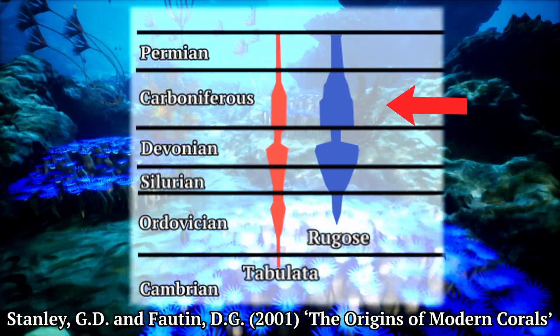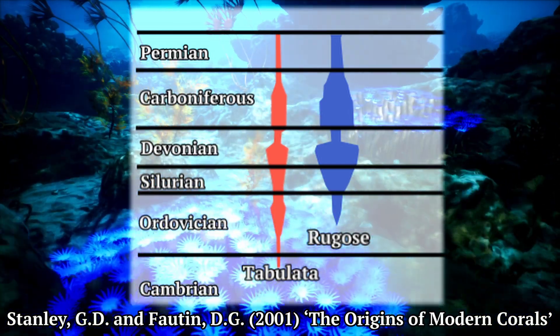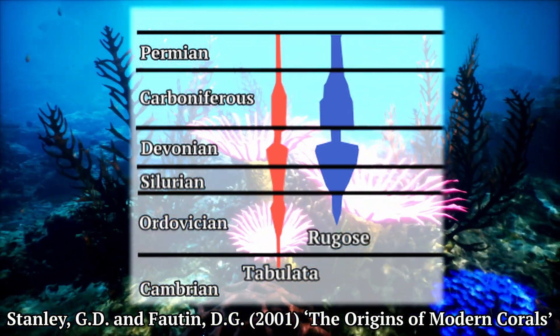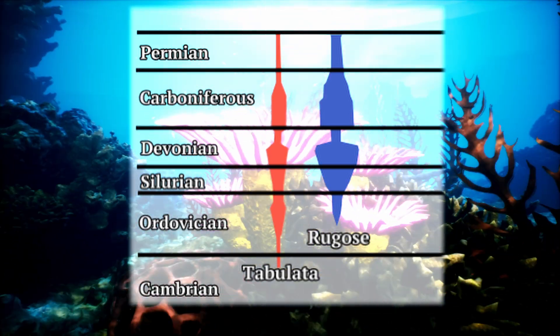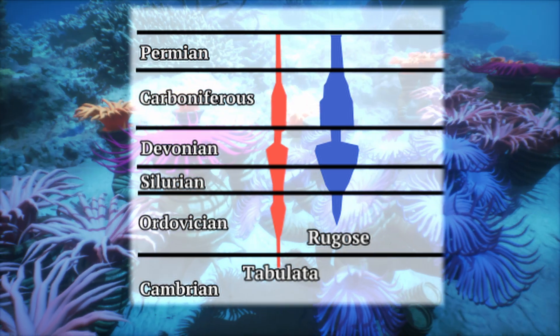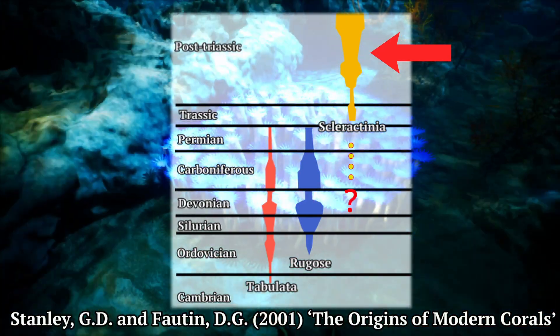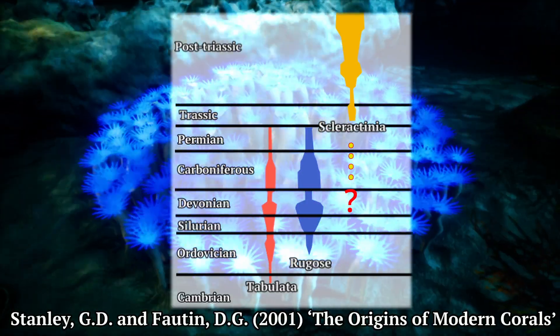During the Carboniferous period, smaller reef mounds began to establish again. However, both tabulate and rugose corals went extinct due to the most devastating of all mass extinctions — the Permian-Triassic mass extinction. No fossilized corals have been found in the gap of seven to eight million years that followed. It was only after this period that the scleractinian corals began to appear, and their origin is not entirely clear — they are likely not descendants of the tabulate or rugose corals, and are not considered their direct ancestors.